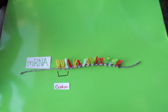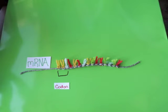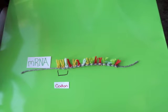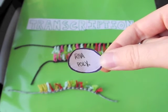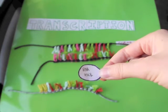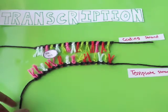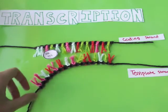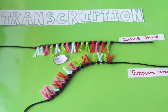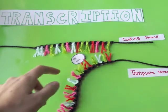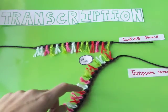mRNA, messenger ribonucleic acid, carries information from DNA outside the nucleus to continue the process of protein synthesis. RNA replaces the thymine base with uracil. mRNA is formed through the transcription of DNA, which takes place in the nucleoplasm. This process allows instructions for protein formation to be copied from DNA into mRNA.